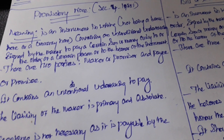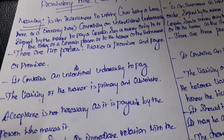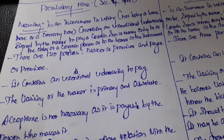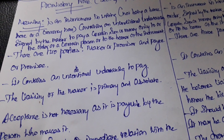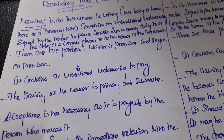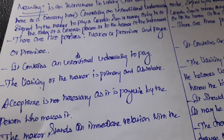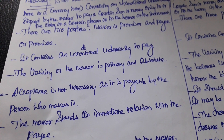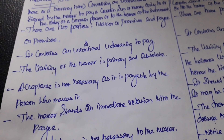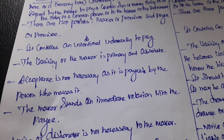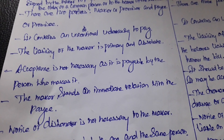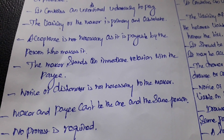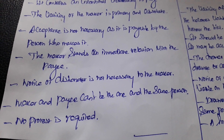A bank note or currency note is not a promissory note. There are two parties: maker or promisor, and the payee or promisee. It contains an unconditional undertaking to pay. The liability of the maker is primary and absolute. Acceptance is not necessary as it is payable by the person who makes it. The maker stands in immediate relation with the payee. Notice of dishonor is not necessary to the maker, and no protest is required.